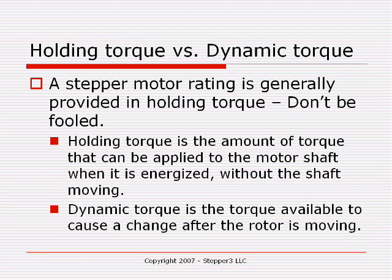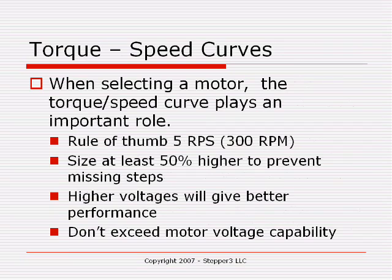Dynamic torque is different — that means you're already moving and need to accelerate or decelerate. The dynamic torque is not 260 ounce-inches even if that's the holding torque rating; it's generally much less than that. You need to go to the torque speed curves to determine what amount of torque is available at a specific speed. There are a couple of rules of thumb.